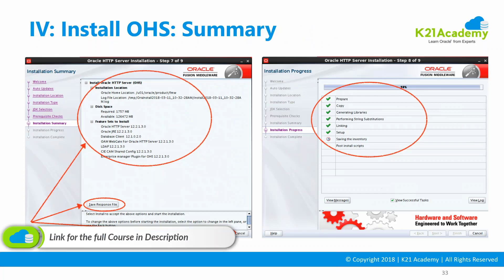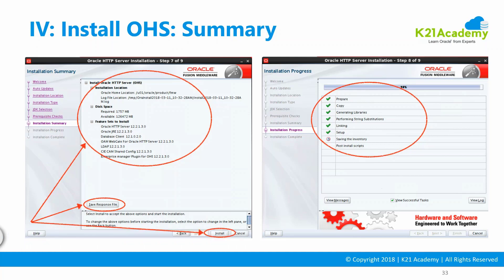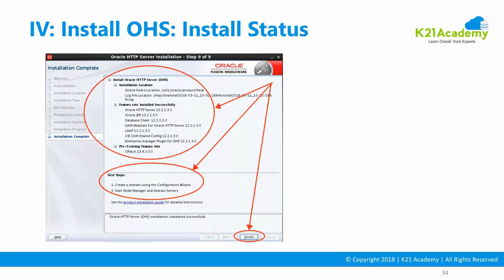Click the Install button and on the right-hand side you'll see the installation progress. Like any other installer, it will prepare, copy the software, generate library files, do relinking, do setup, register with the Oracle Inventory, and run post-install steps. Once it reaches 100%, you'll get a screen saying install status complete. After that, you still need to configure the domain — run the configuration wizard to configure the WebLogic domain — and then start the Node Manager and Oracle HTTP Server.